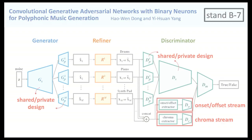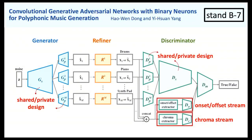We also propose several new designs, such as shared-private designs for the generator and the discriminator, as well as onset-offset streams and chroma streams to further improve the generator and discriminator.